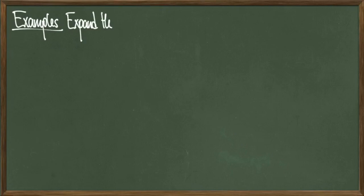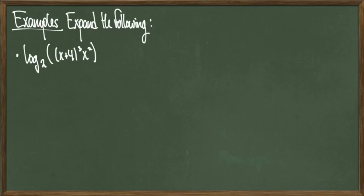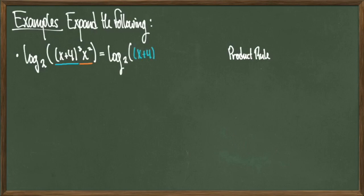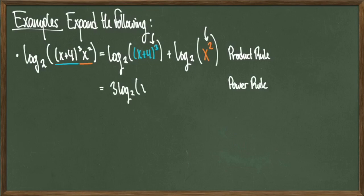Let's jump into some examples. Let's expand the following quantities. Start with log base 2 of quantity x plus 4 cubed times x squared. Since I have a product on the inside, I can use the product rule, and this will simplify to log base 2 of x plus 4 cubed plus log base 2 of x squared. Since I have powers present, I can use the power rule and bring those powers out front to give me 3 times log base 2 of x plus 4 plus 2 times log base 2 of x. And that's all the simplification that we can do, so we're done.